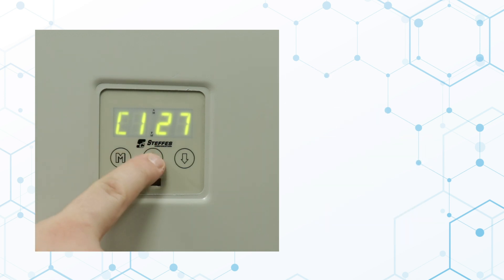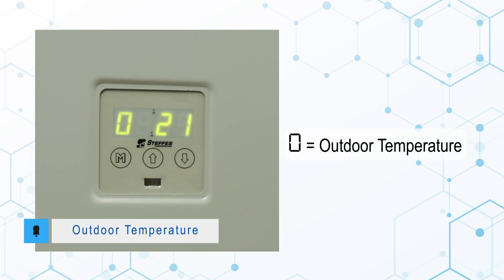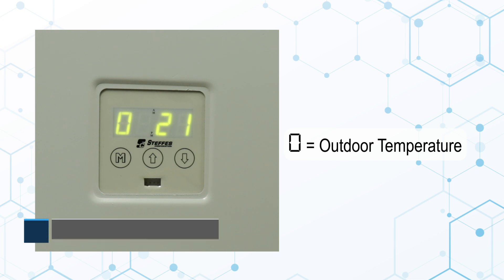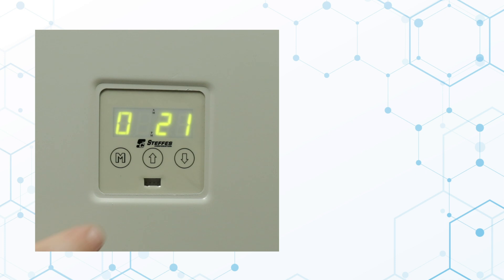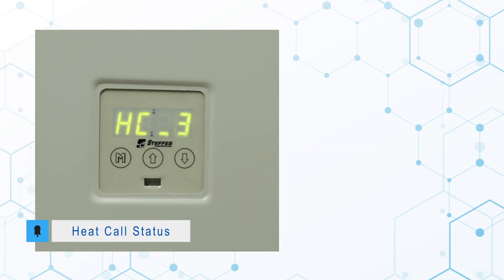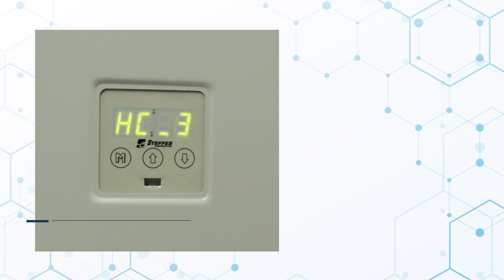Press and release the up arrow. The display will show O and a number, indicating the current outdoor temperature as read by the hardwired outdoor sensor or PLC transmitting device. Press the up arrow again. The display will show HC and a number, indicating what stage of heat call the furnace is currently receiving from one or more thermostats in the application.